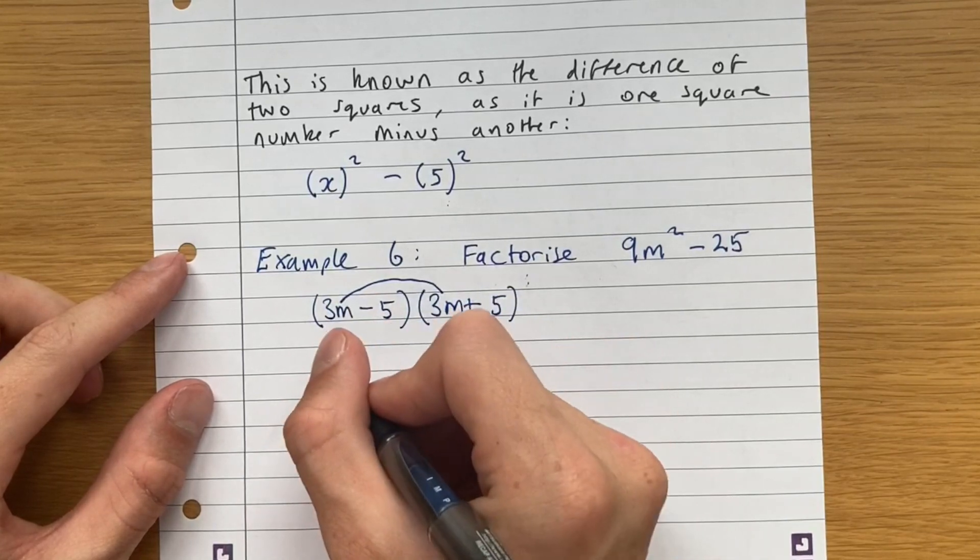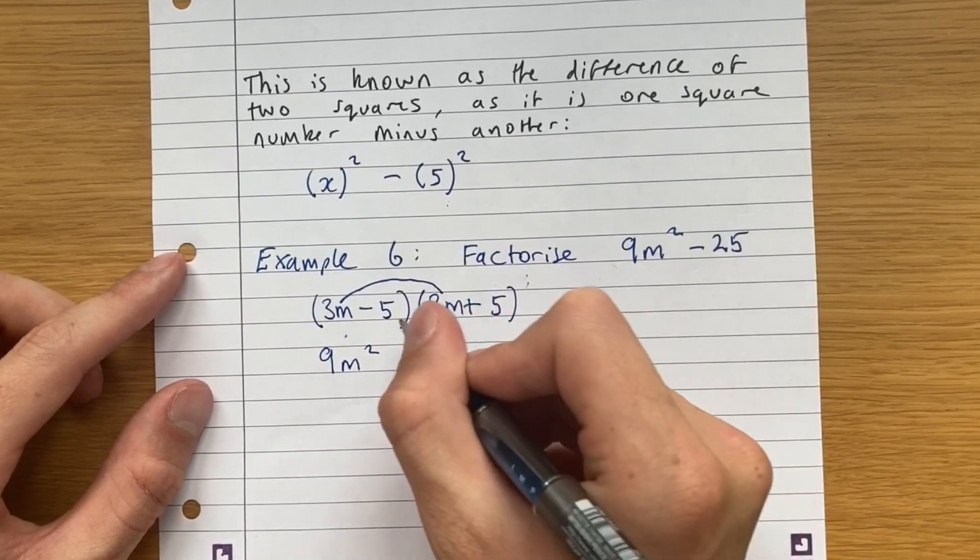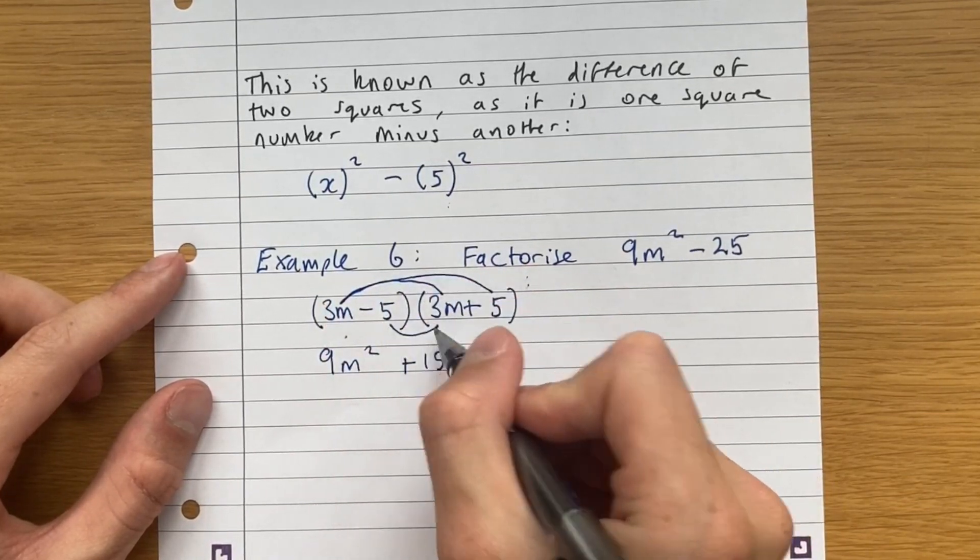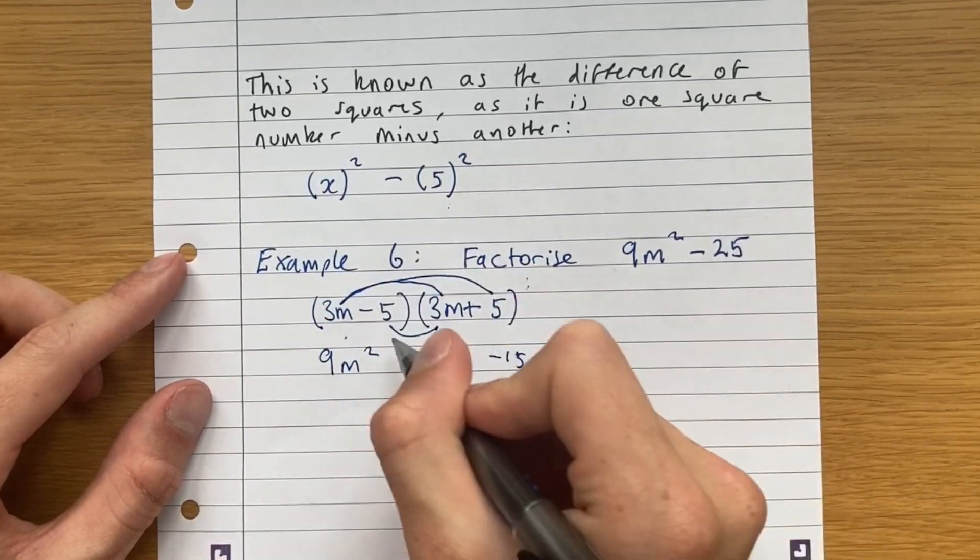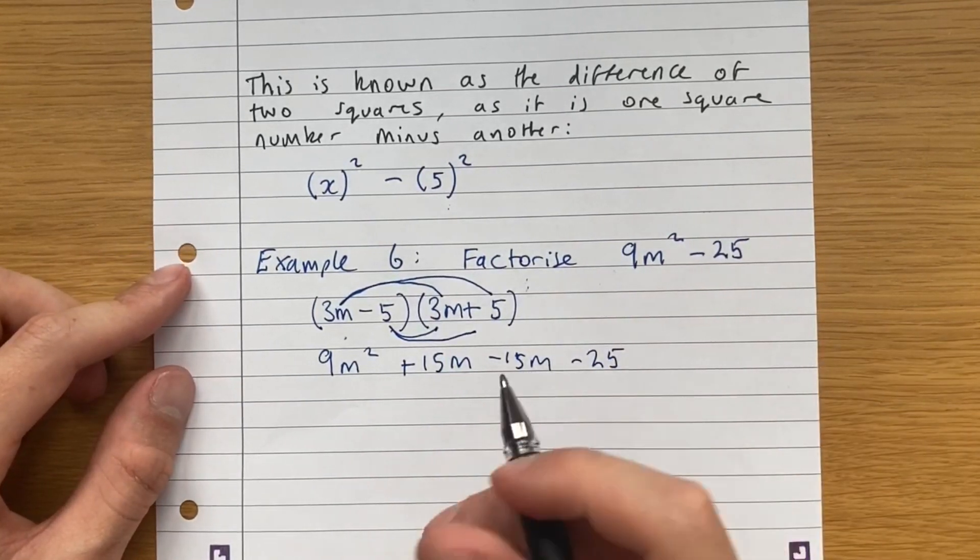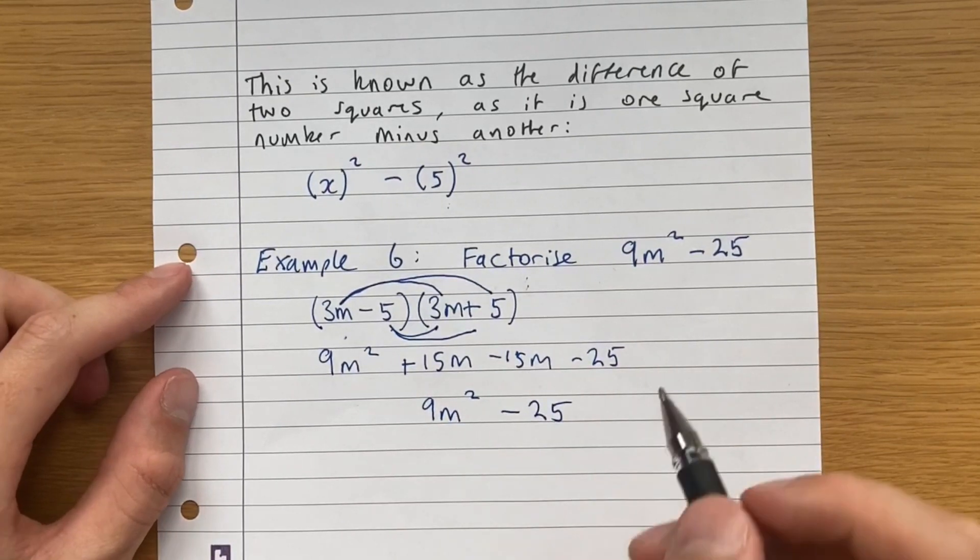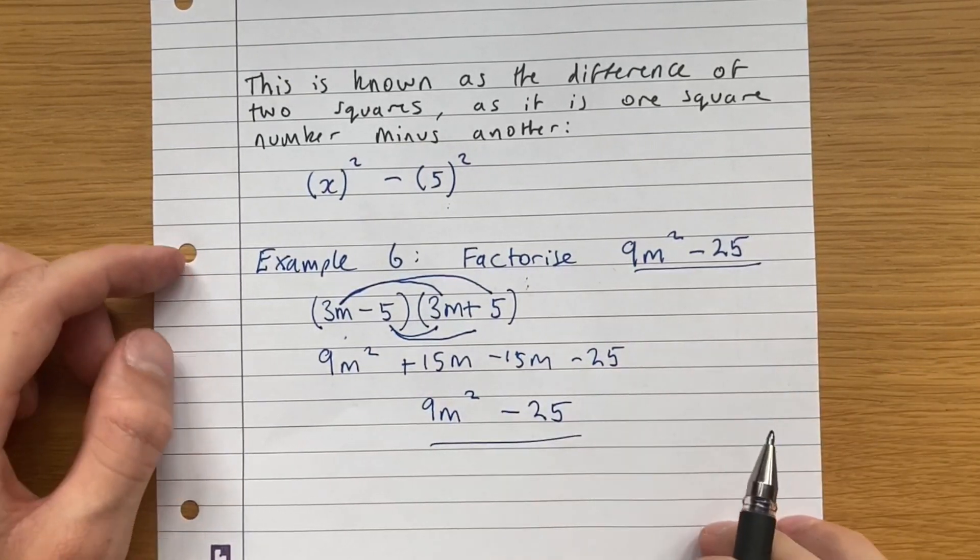now when we multiply it out, we get 3m times 3m is 9m squared, plus 15m, which is there, minus 15m, minus 25. 15m minus 15m is 0. So this just leaves us with 9m squared minus 25, which is what we had.